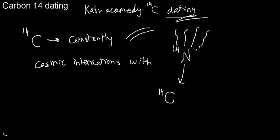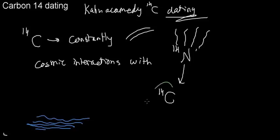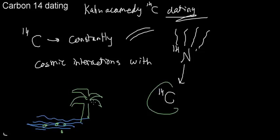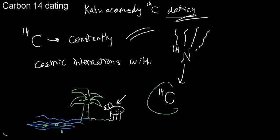Because carbon-14 is constantly forming, it seeps down into our water sources, so our water sources are filled with carbon-14. This means it will also be in our trees, in the ground, and animals that graze will have it in their biological systems. And if I eat that animal, I have carbon-14 in me too.